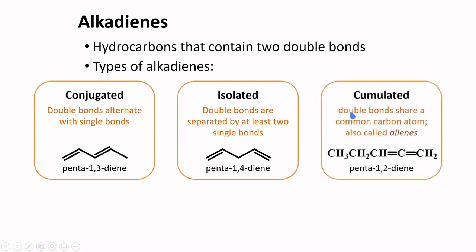The last type of alkadienes is called cumulated alkadienes. The double bonds share a common carbon atom. They are also called allenes. Here, this central carbon is linked by two double bonds.